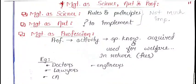Hello everyone and welcome to the third part of Chapter 1 on the nature and significance of management. Till now we have seen the introduction, meaning, nature, and importance of management. In this part we are going to see management as a science, art, and profession in detail. This question can be asked for three marks, and the heading 'management as a profession' can be individually asked for two or three marks, so it is an important topic.